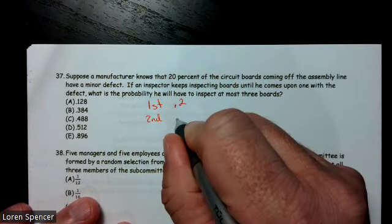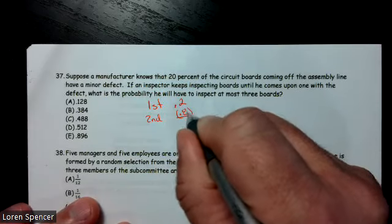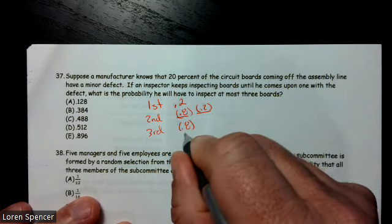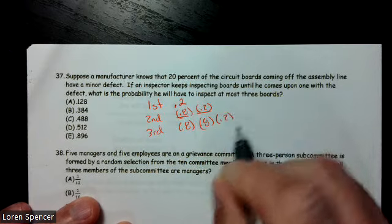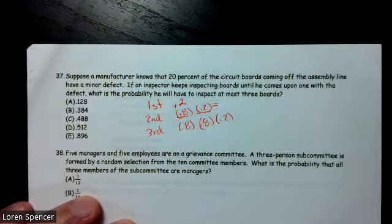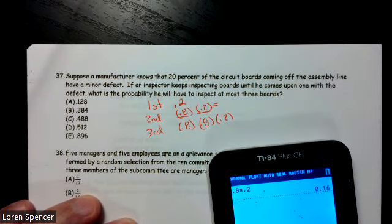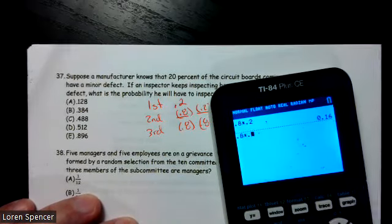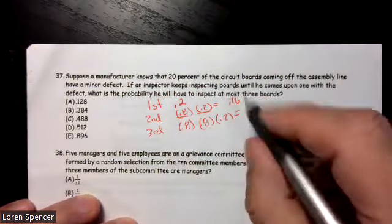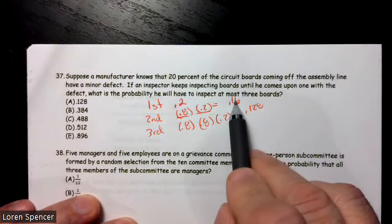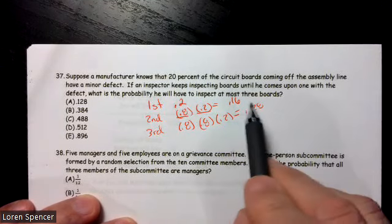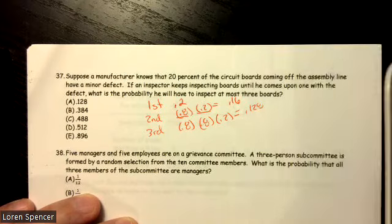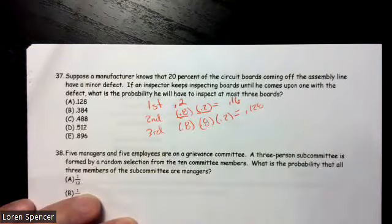The probability the second one means the first one was not defective, which is 0.8. But the second one had to be, so this is 0.2. Then we get to the third one, which is 0.8, not defective, 0.8, not defective, and 0.2. If I multiply these two together, 0.8 times 0.2 is 0.16. 0.8 times 0.8 times 0.2 is 0.128. So this is the probability of the first one, the second one, the third one. So it could be this or this or this. So let's add up those values. 0.2 plus 0.16 plus 0.128. And we end up getting 0.488. So our answer choice is C.